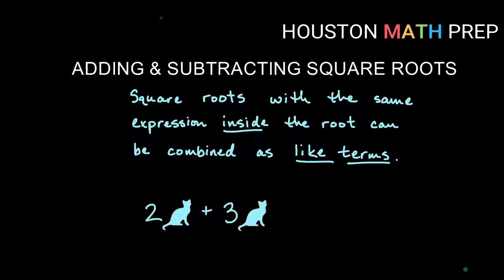Hey everyone, Houston Math Prep here. We are hoping to make your adding and subtracting square roots as easy as adding cats, just like you see here. Square roots with the same expression inside the root can be combined as like terms. The type of term does not change — when adding cats together, you end up with cats. So 2 cats plus 3 cats is 5 cats, and it's the same with roots as long as the number underneath the root is the same.